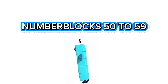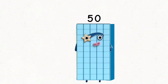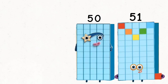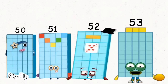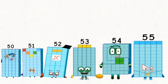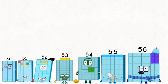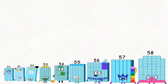Number blocks fifty to fifty-nine. Fifty. Fifty-one. Fifty-two. Fifty-three. Fifty-four. Fifty-five. Fifty-six. Fifty-seven. Fifty-eight. Fifty-nine.